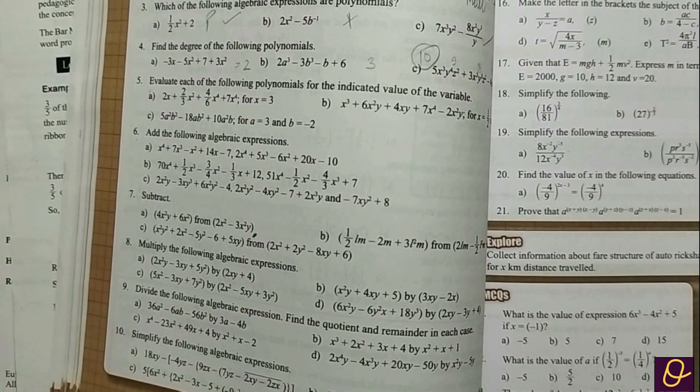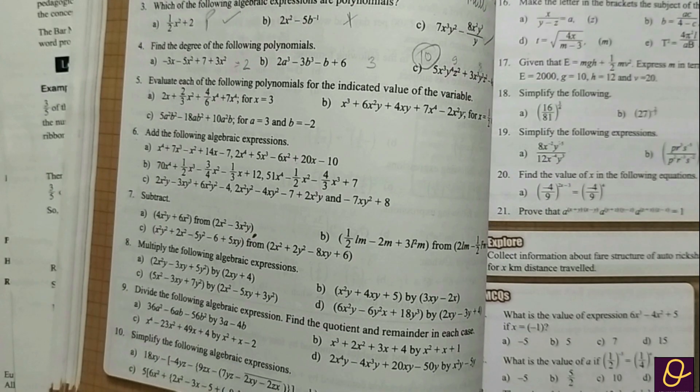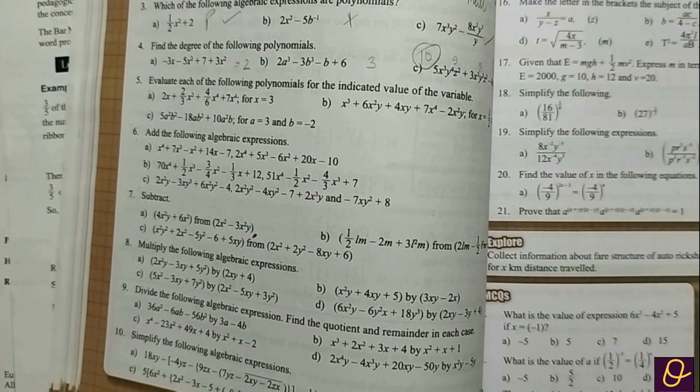Hello everyone, today we are going to discuss exercise problems, just as it is of class. Question number 1 to 8, we have already discussed, so you can check it clearly. Now question number 9, divide the following algebraic expression, find the quotient and remainder in each case.